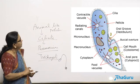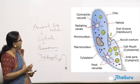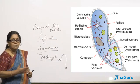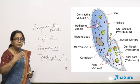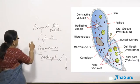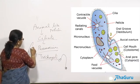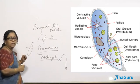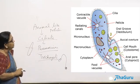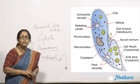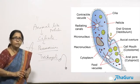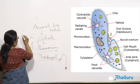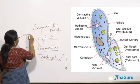Paramecium divides by transverse binary fission. Paramecia are also well known because they are capable of sexual reproduction.